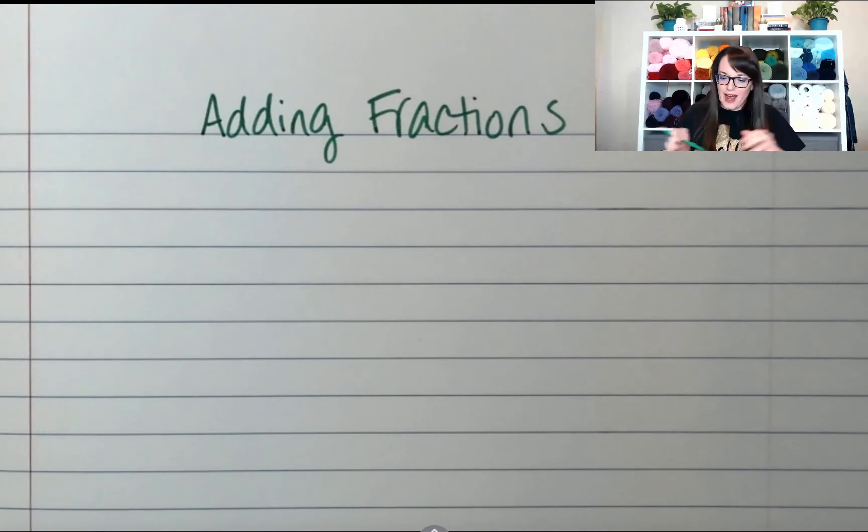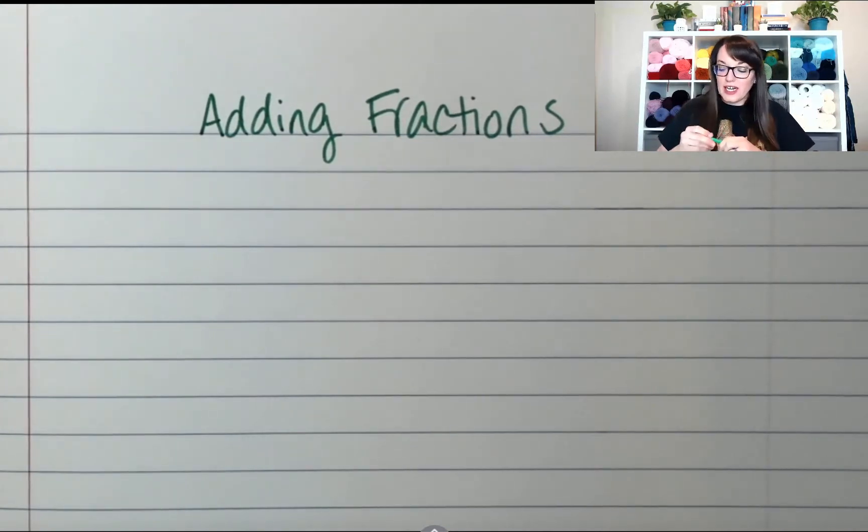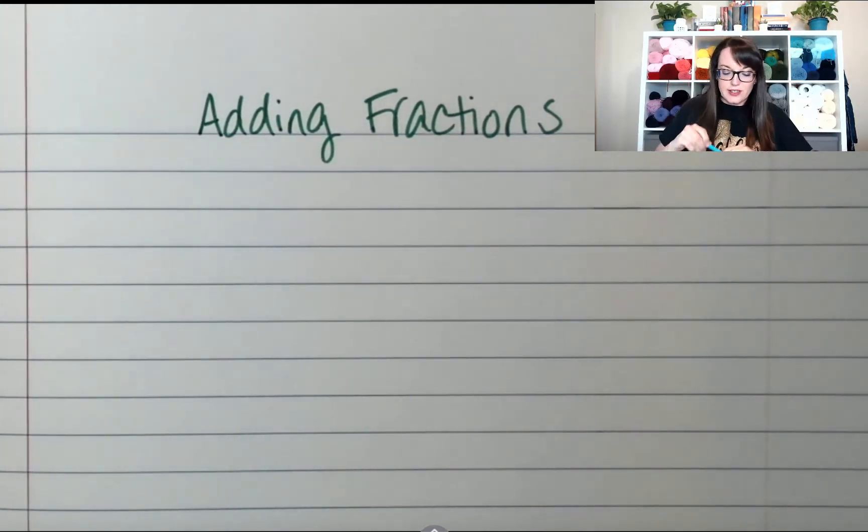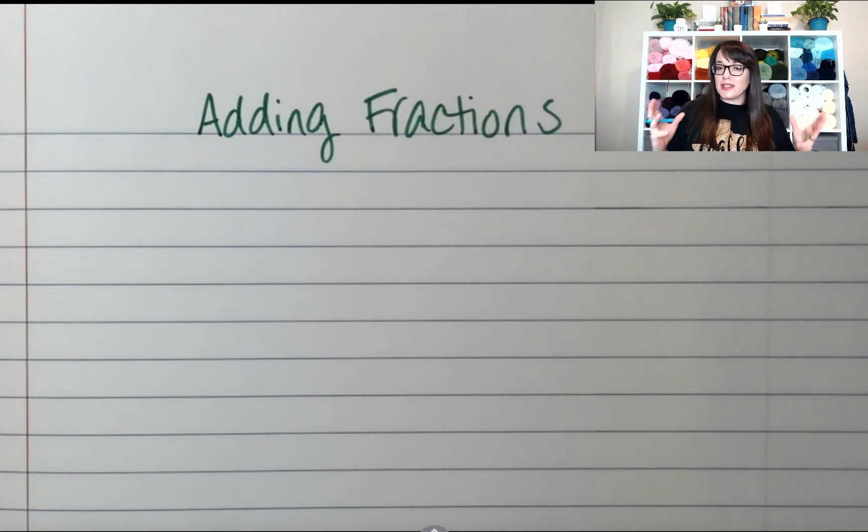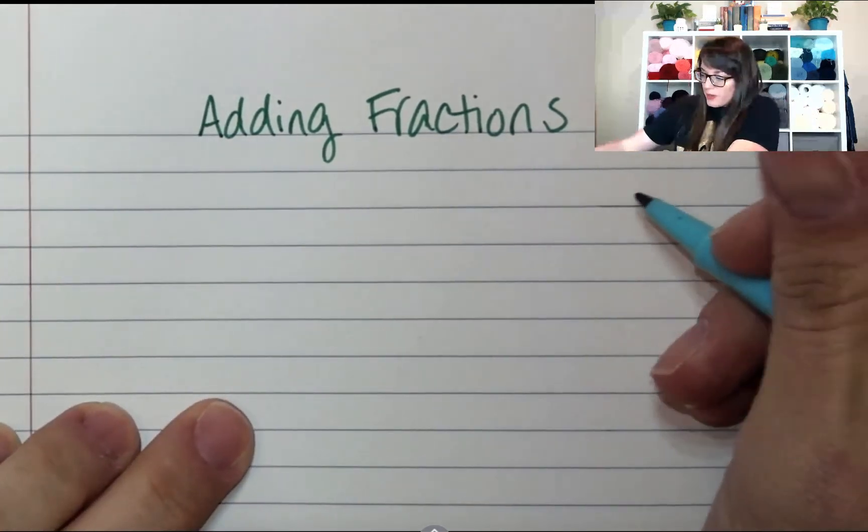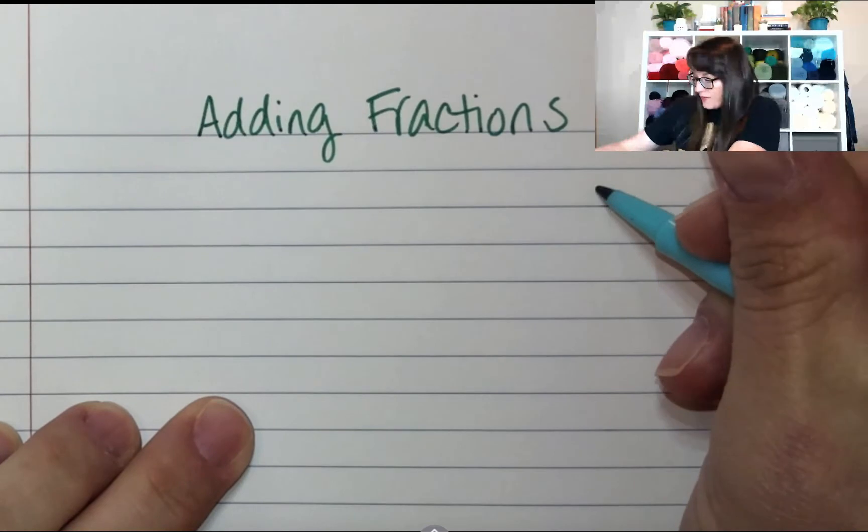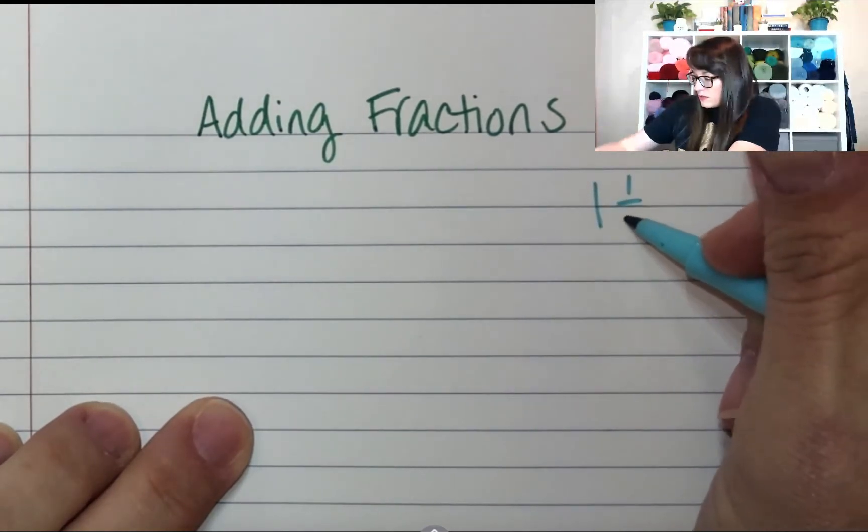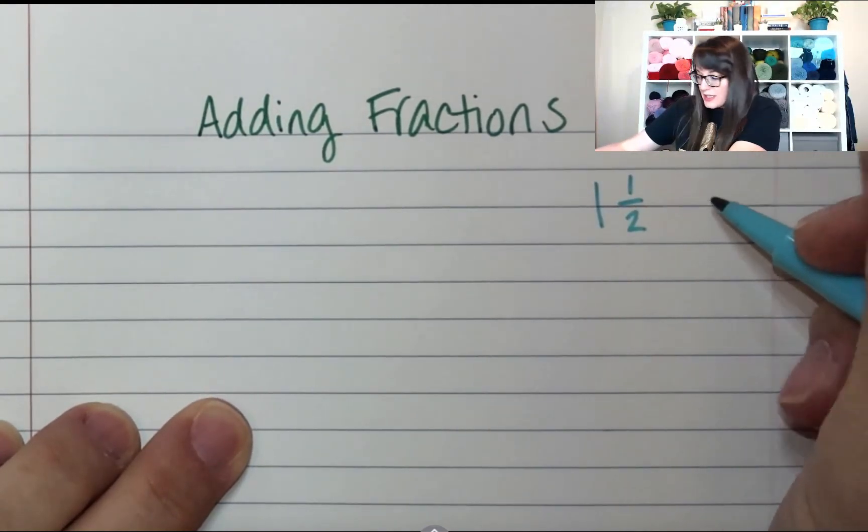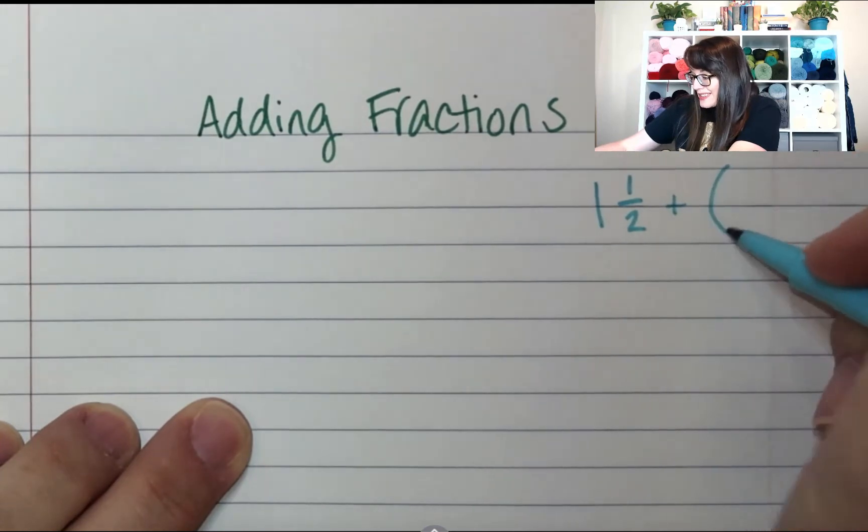Now, this isn't fourth grade adding fractions. This is seventh grade adding fractions. But we do a lot of the same stuff. The rules don't really change. We just add to them. So, the first example we're gonna work out is one and one-half plus negative one-third.